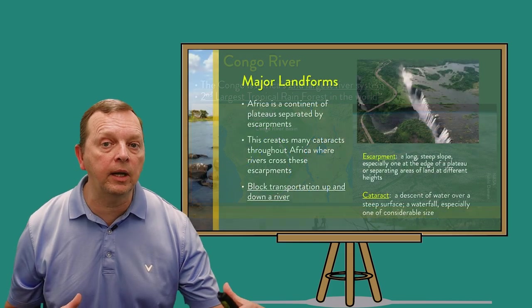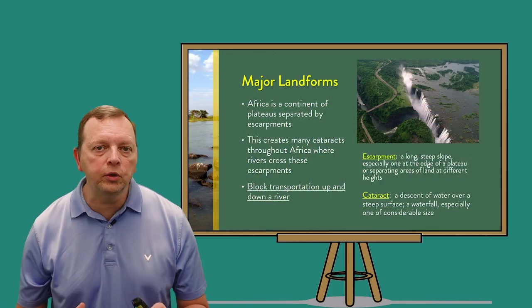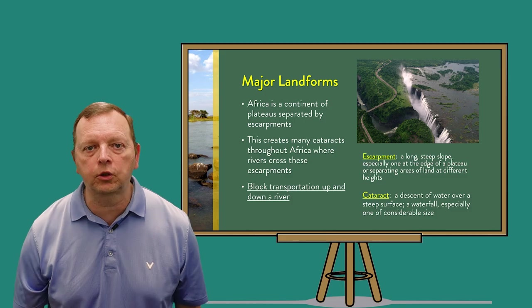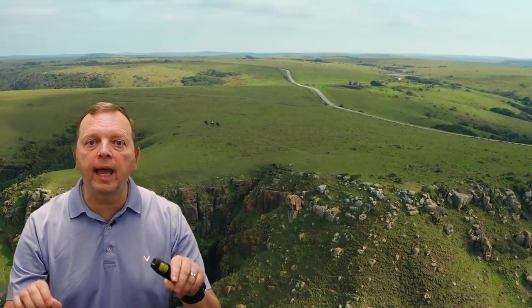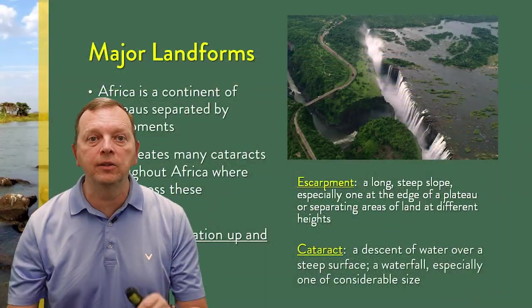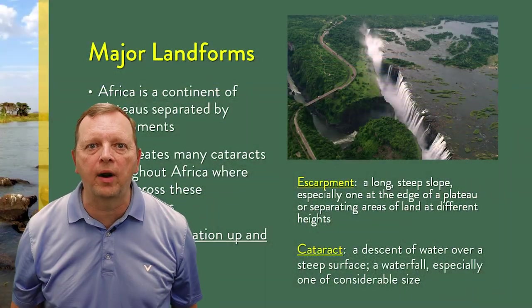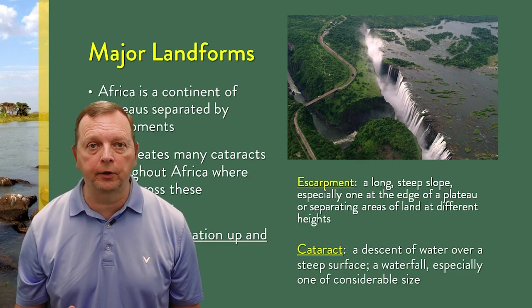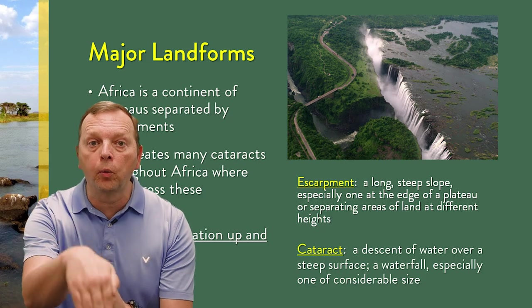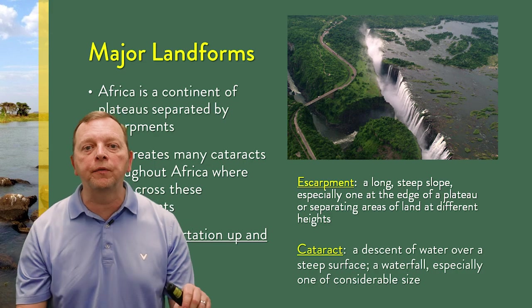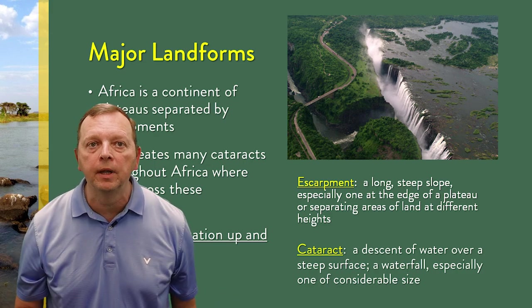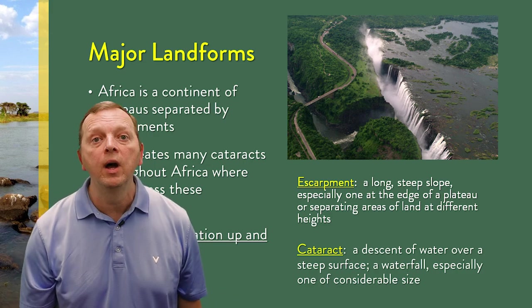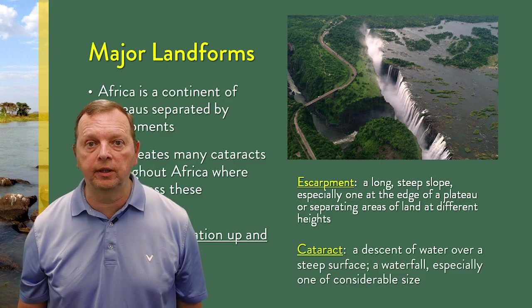Elsewhere, we find that vast areas of Africa are plateaus, which are separated by something known as escarpments. Escarpments are long, steep slopes that separate areas of land at different heights. As you might imagine, this interferes with land travel. These escarpments also create problems for river transportation in Africa. If a river flows over one of these escarpments, a type of waterfall called a cataract is formed — it has a steep surface but can be very wide. So while escarpments hinder land travel, cataracts hinder river transportation in Africa.